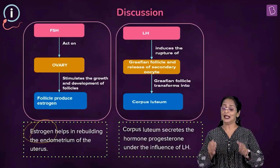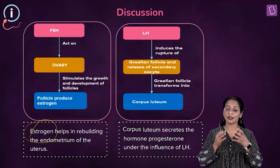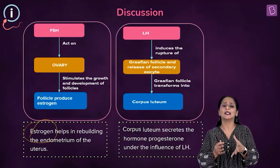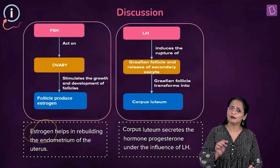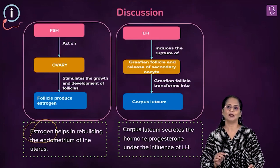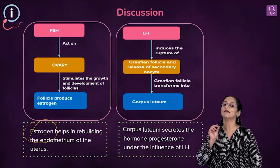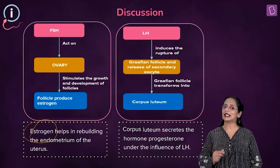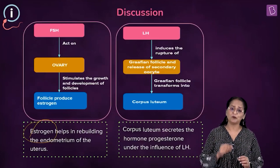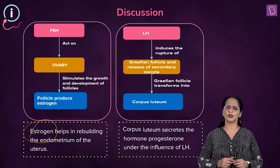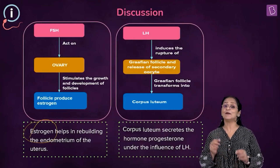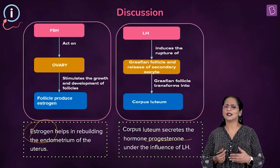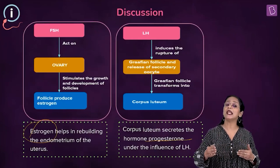What does LH do? Luteinizing hormone acts on the Graafian follicle, helping it to rupture and release the secondary oocyte — it influences the phenomenon of ovulation. Ovulation is the release of the secondary oocyte from a Graafian follicle. This Graafian follicle then gets converted into a yellow structure called the corpus luteum, which secretes a hormone called progesterone.